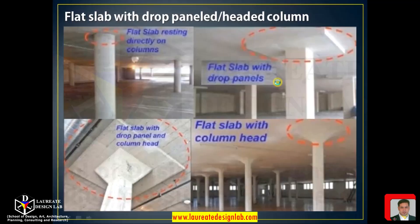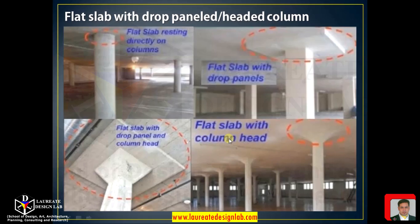Now let's understand how slabs or structural slabs are supported by columns. One combination is a flat slab resting directly on the column. In another case, you have a flat slab being supported by a drop panel, which then transfers the load to the column. In the third combination, the flat slab is supported by a column head — a column which has a head.